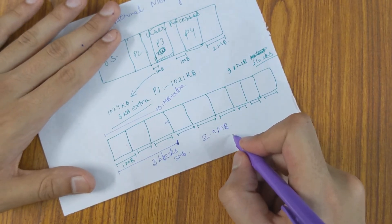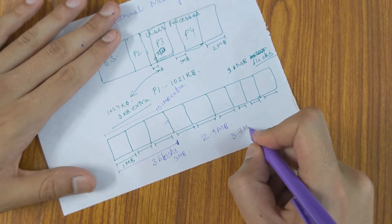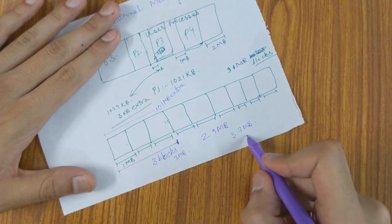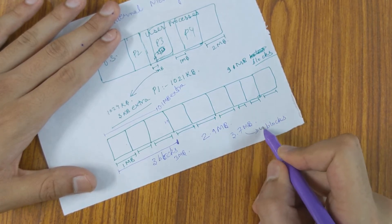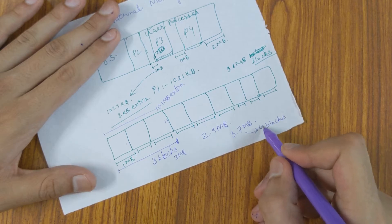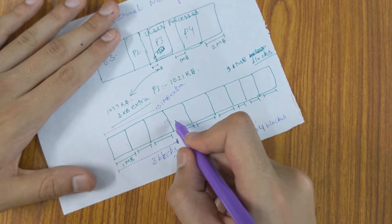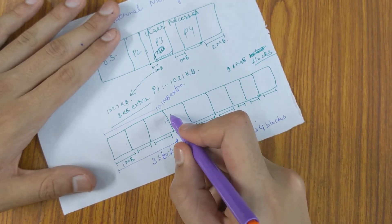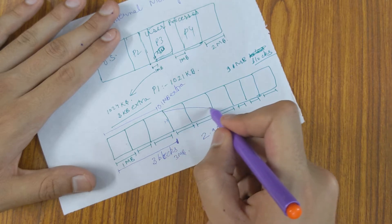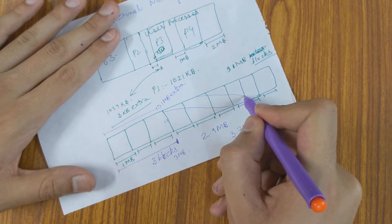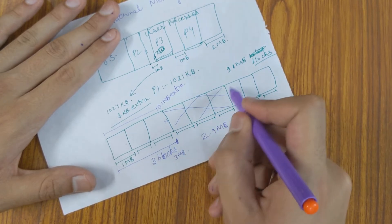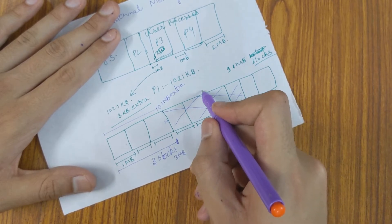Now our process comes with 3.7 MB requirement. Then we allocate 4 blocks. Got it? Now, it will be 1, 2, 3, 4. These 4 blocks it will be covering. So, this will be P2.